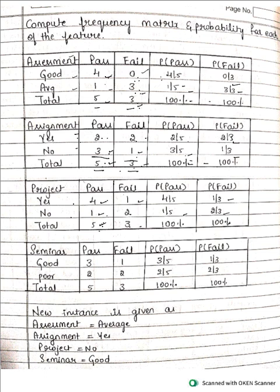For the seminar attribute, count how many pass and fail for each category. The likelihood probability for good on pass is 3 by 5, good on fail is 1 by 3, average on pass is 2 by 5, and average on fail is 2 by 3. Put 100% in the total row.